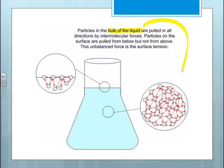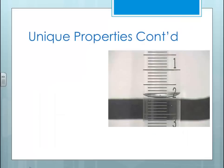At a molecular level, particles in the bulk of the liquid are pulled in all directions by the intermolecular forces, whereas particles at the surface are pulled from below but not above. This unbalanced force is surface tension, which results in these forces being stronger. That's the same reason why if you've ever jumped off the high dive and it hurt really bad — all of these particles right at the top are being held together with stronger force, and you've got to break through that force to get into the pool.